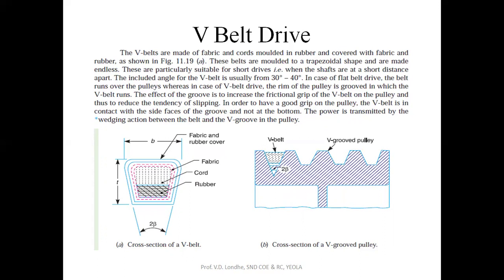If the gripping is good, the power transmission will be maximum compared to the flat belt system. This is the positive point of the V-belt over the flat belt: since the cross-section of the pulley has a groove shape, the V-belt gets fixed permanently into the pulley, so gripping is maximum and there is no chance of slipping. This is the key advantage of the V-belt drive over the flat belt drive system.